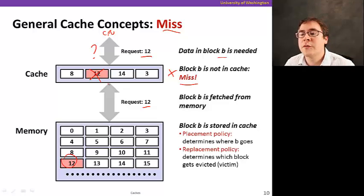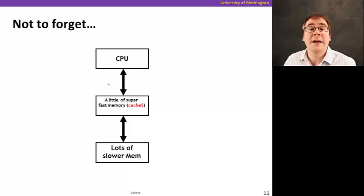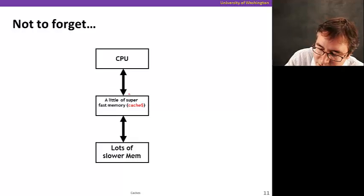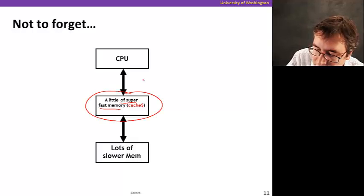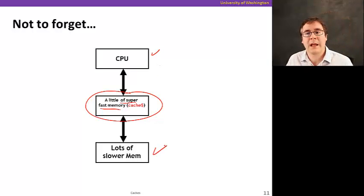So one thing I don't want you to forget from this first video on caches is that a cache is this little bit of very fast memory in between CPU and lots of slower memory. So we can give the CPU the illusion that memory is faster by putting a little bit of storage closer to it.